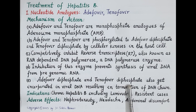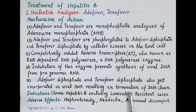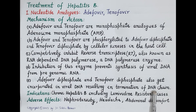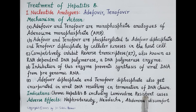Because adefovir diphosphate and tenofovir diphosphate have a structure resembling the nucleotide adenosine, these drugs also get incorporated into viral DNA in place of adenosine while it is being formed, resulting in termination of the DNA chain and preventing synthesis of viral DNA. These drugs are used in the treatment of chronic hepatitis B and are also used in lamivudine-resistant cases of hepatitis B.